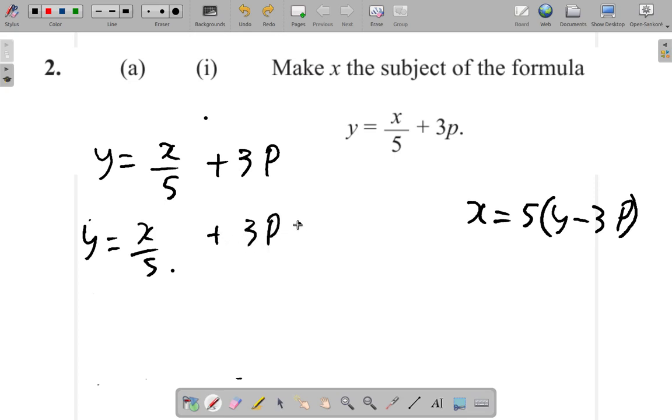Now, let's get rid of 3p first, then the 5. I have y equal x over 5 plus 3p. I subtract 3p from the right. Anything you do to the right, you must do to the left as well because you want to maintain balance.